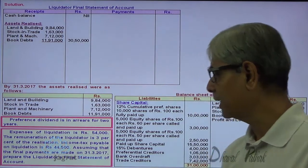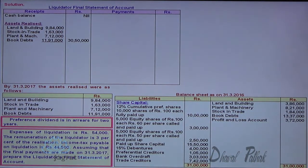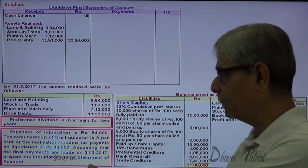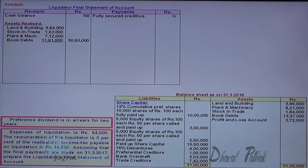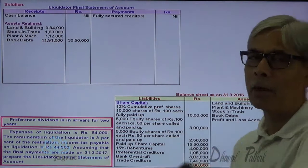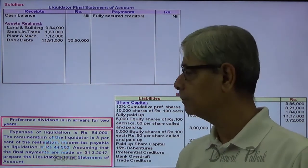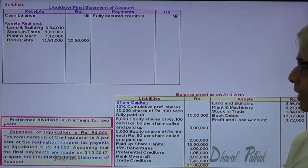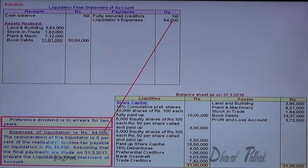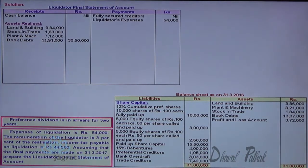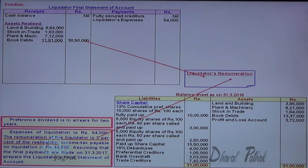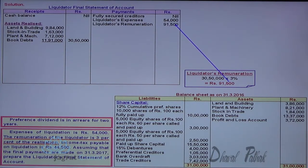First of all, pay fully secured creditors. Finding out if there are any fully secured creditors — there are none, so amount paid to fully secured creditors is nil. Next, pay liquidation expenses: 54,000. Then pay liquidator's remuneration — 3% of realization — so that works out to 30 lakh into 3% = 91,500 as liquidator's remuneration.